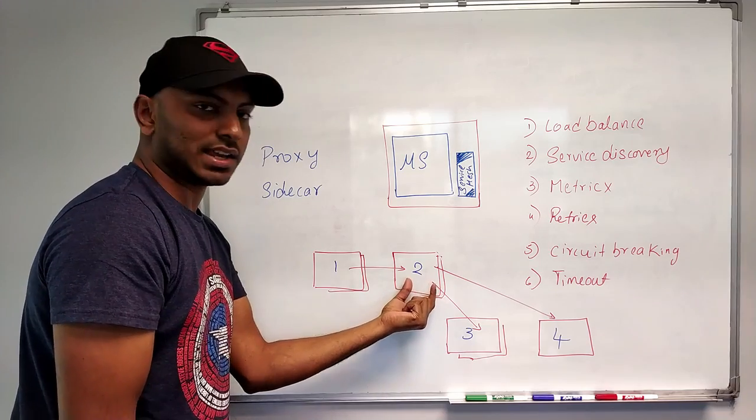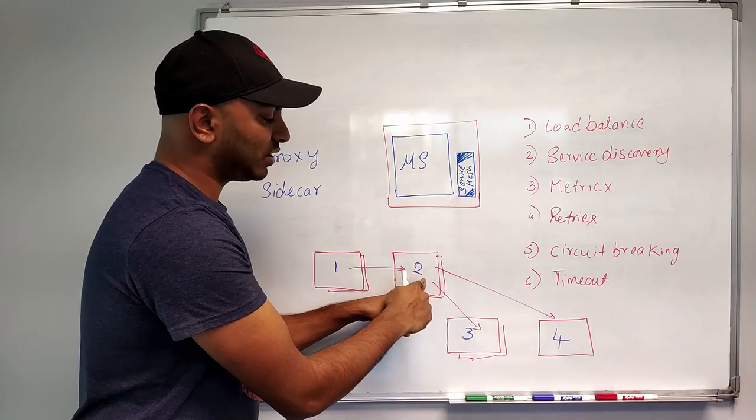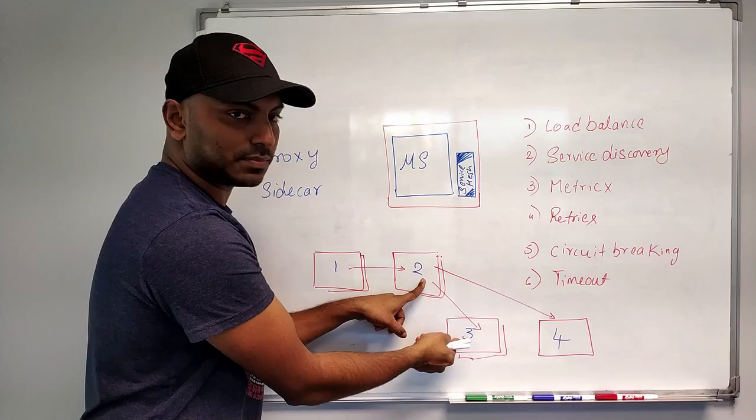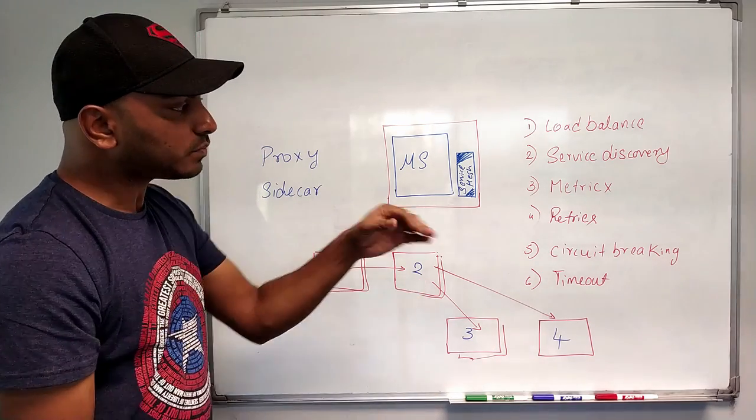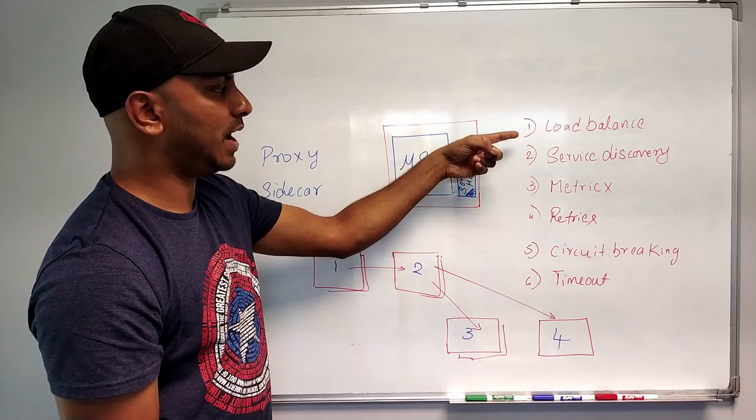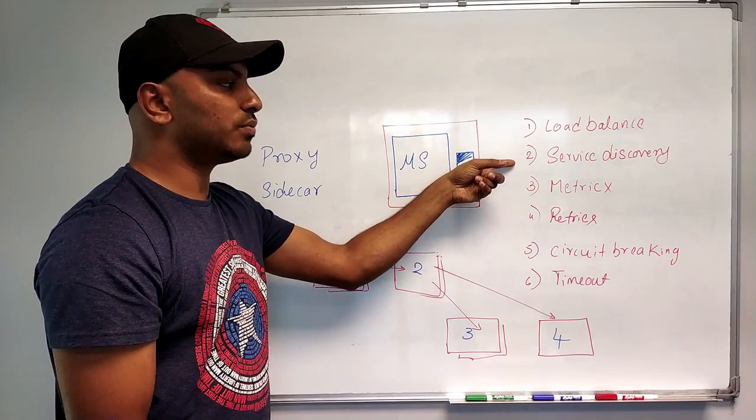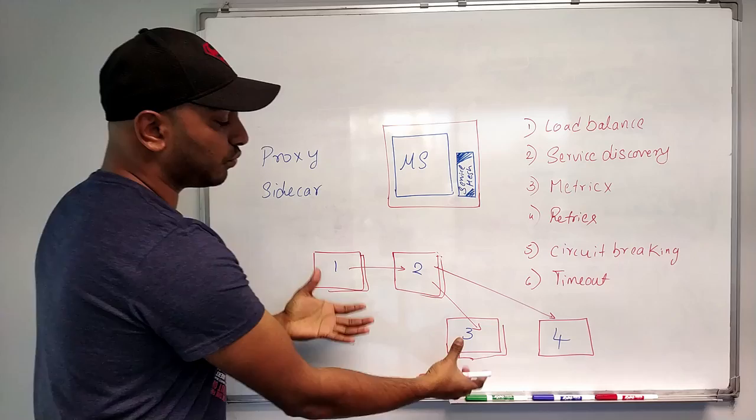Because the same thing happens here as well. In the microservice two, we need to get the service registry for this microservice, this microservice, and then also we need to balance, load balance that. So these are the two problems. We had to do the load balancing. We had to get this, we had to discover where is the service.